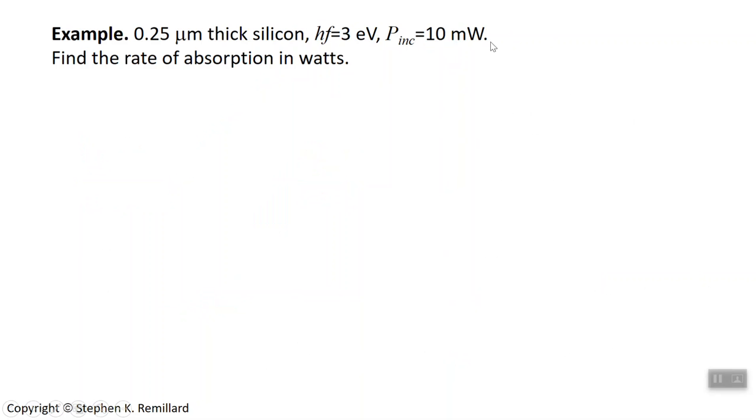So we'll use silicon. The thickness is known. We have 10 milliwatts incident. Let's find the rate of absorption in watts. That is how many joules per second of light is being absorbed by the semiconductor. You're going to have to find a value for alpha. You're given the energy so you have the wavelength.